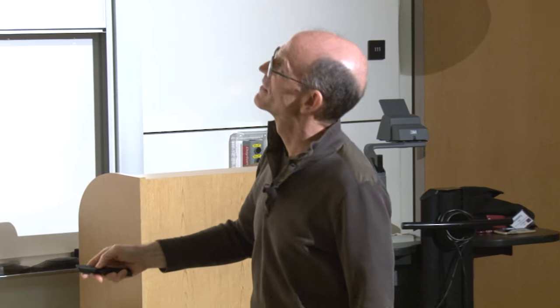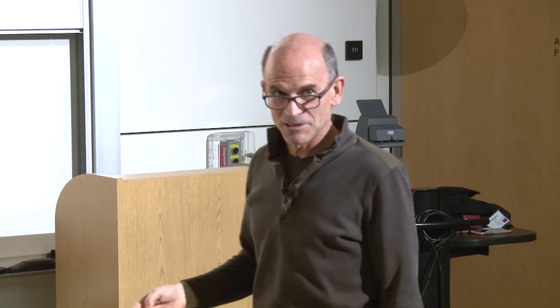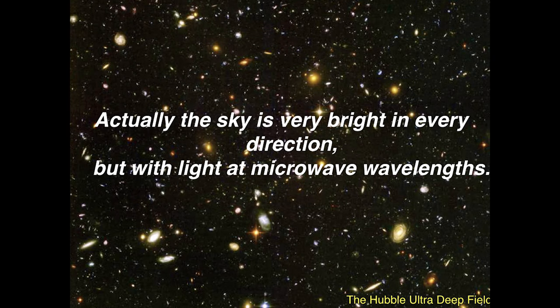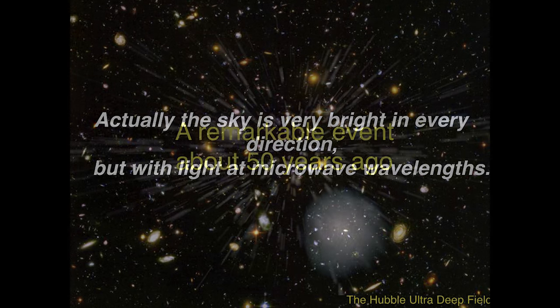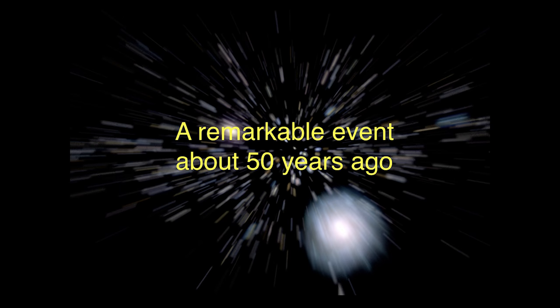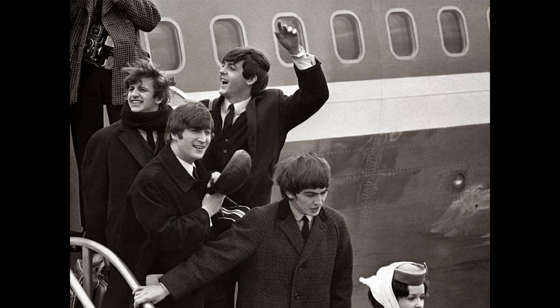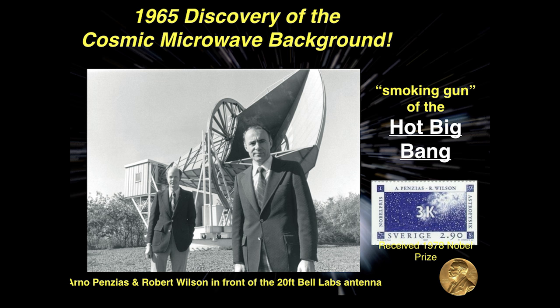It turns out the sky is very bright in all directions, very uniformly, but not at wavelengths your eye can see. This remarkable fact has given cosmologists careers to study. About 50 years ago, Arno Penzias and Robert Wilson discovered this cosmic microwave background — a glow at microwave wavelengths peaking around a millimeter, present wherever they looked.